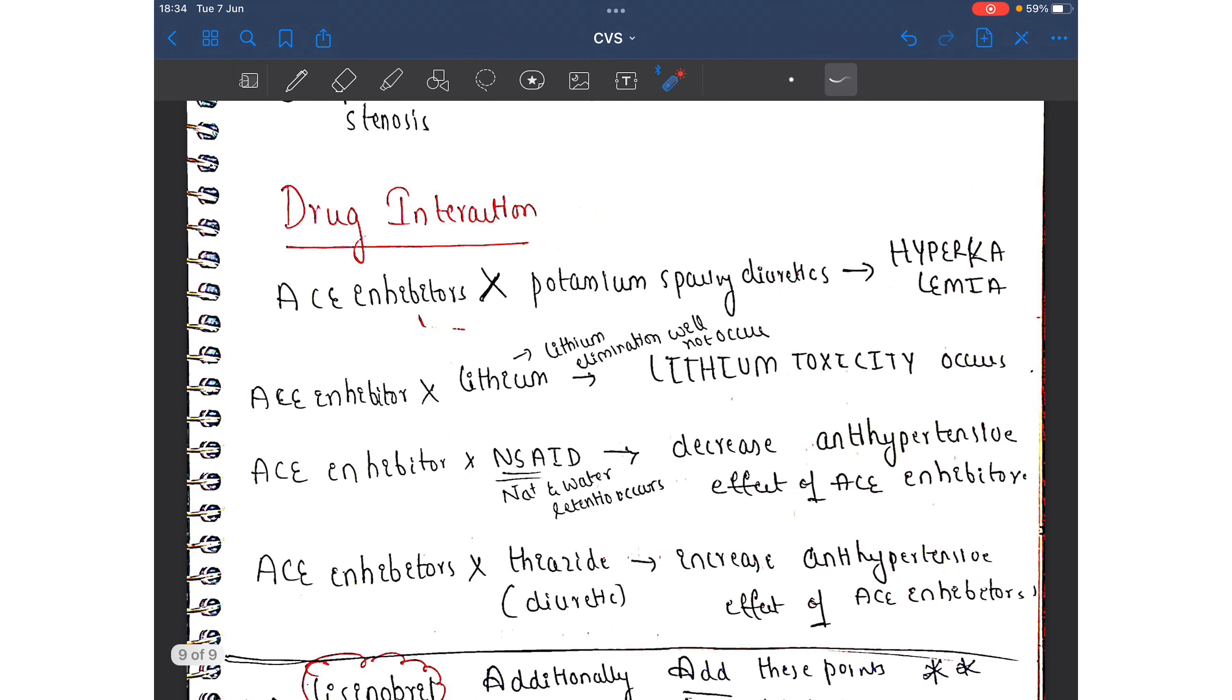Next is drug interactions. When you give ACE inhibitors along with potassium-sparing diuretics, there is a serious side effect of hyperkalemia.